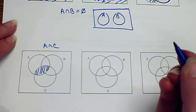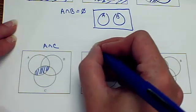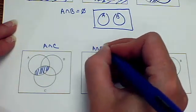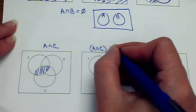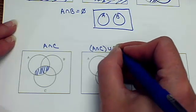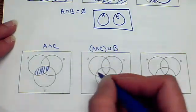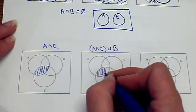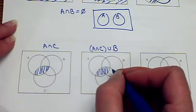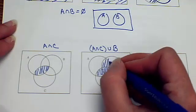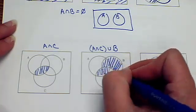What if we did A intersect C, which we already have, but let's union that with B. So we already had the A intersect C. And when I say union it with B, I'm going to include all of B.